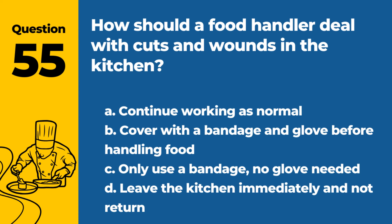Question 55. How should a food handler deal with cuts and wounds in the kitchen? a. Continue working as normal. b. Cover with a bandage and glove before handling food. c. Only use a bandage, no glove needed. d. Leave the kitchen immediately and not return. Answer: b. Cover with a bandage and glove before handling food. This prevents contamination of food.